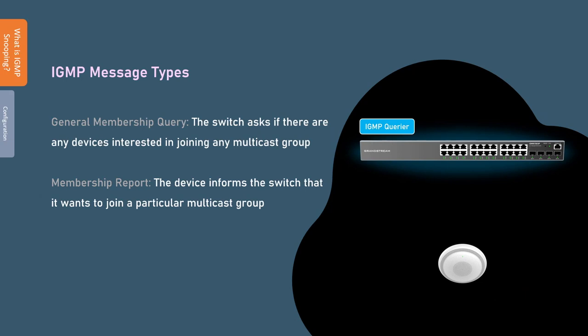Regarding the types of IGMP messages: for every subnet there should be a router or a switch that acts as the IGMP querier. The querier frequently sends a general membership query asking devices in a subnet if they need to receive multicast traffic. Interested devices will send a membership report that includes the multicast group they would like to join.